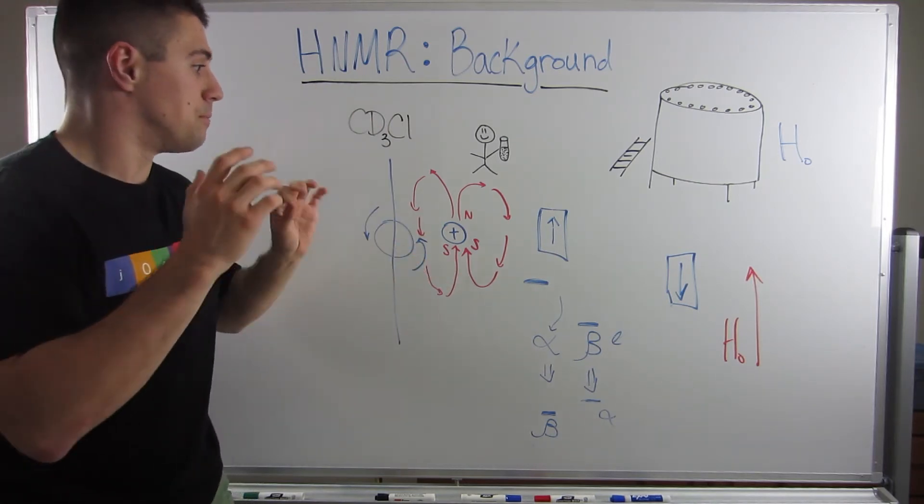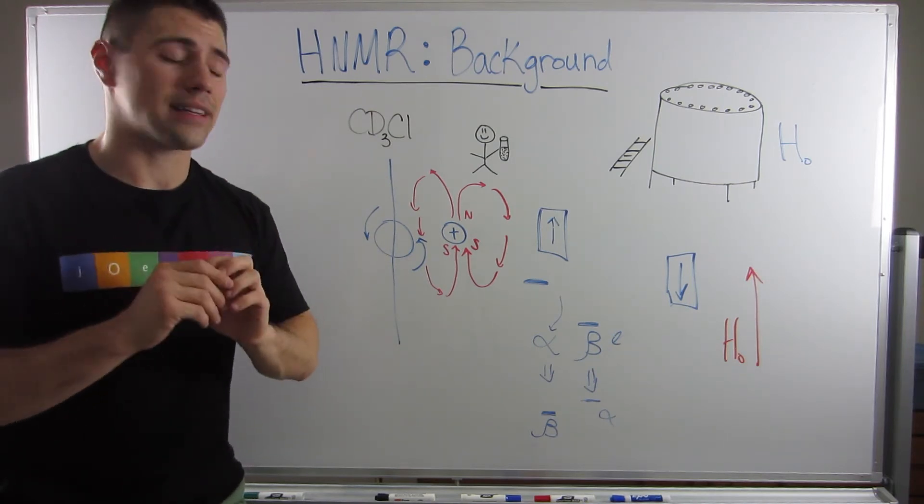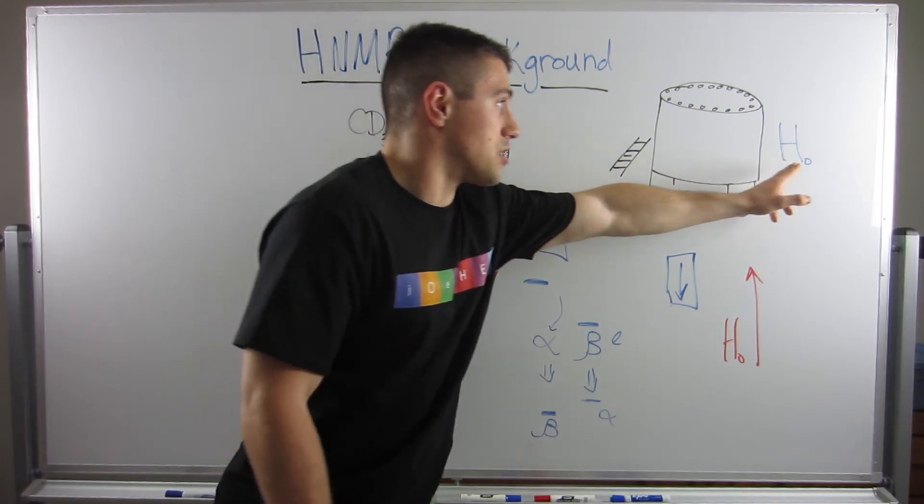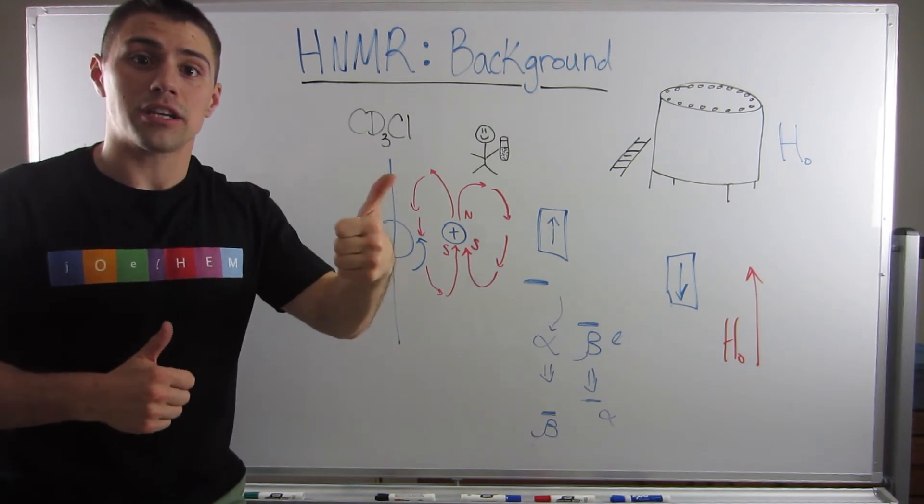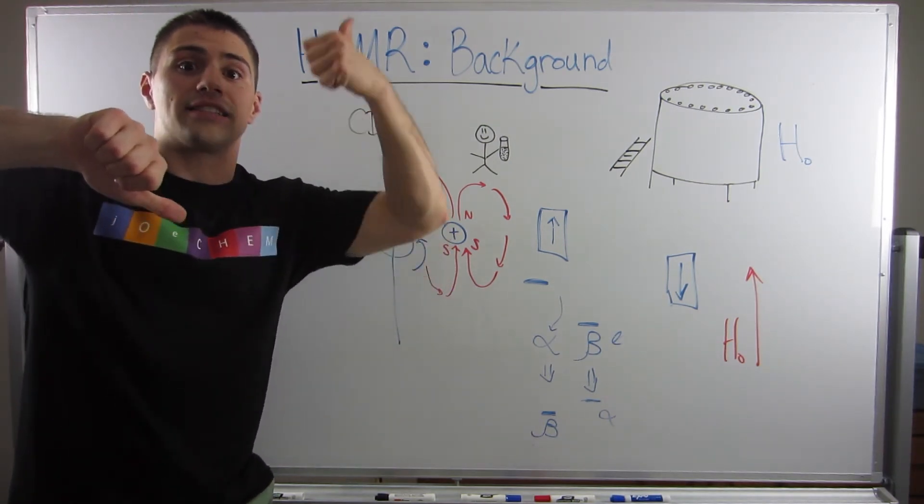So it all boils down to hydrogen nuclei have their own little magnetic fields. When you put your sample in the machine, the external field is applied to all of those hydrogen nuclei. They're either going to be in the same direction or opposite directions.